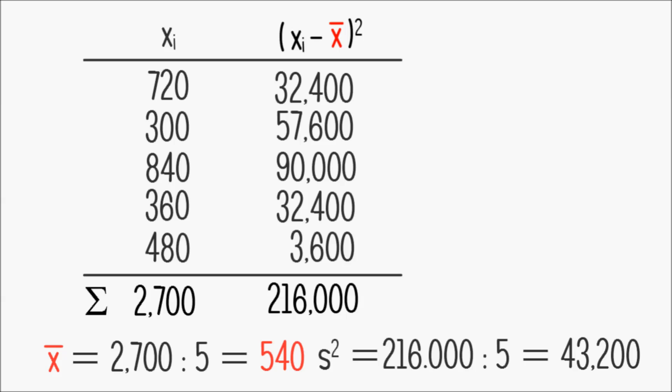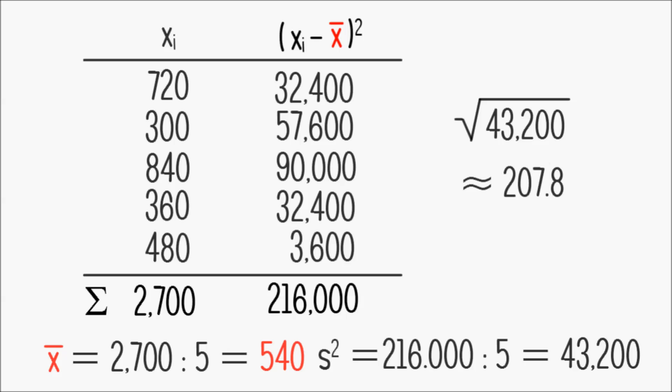The square root of 43200, for example, is approximately 207.8, and that is much better in proportion with the data set.